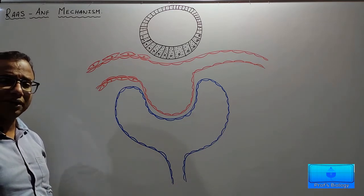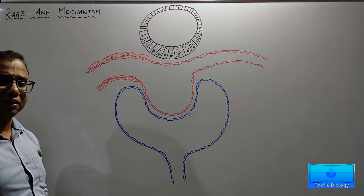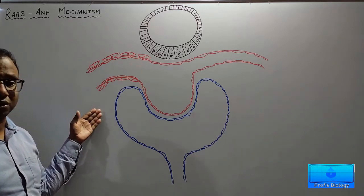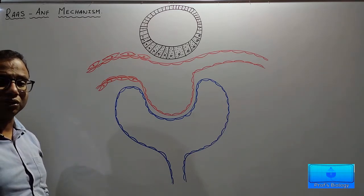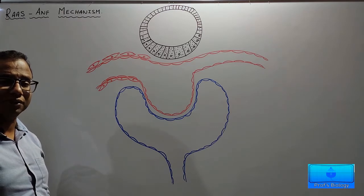In order to understand this RAS mechanism, we'll have to take a longitudinal section of the nephron and understand a structure called the juxtaglomerular apparatus.